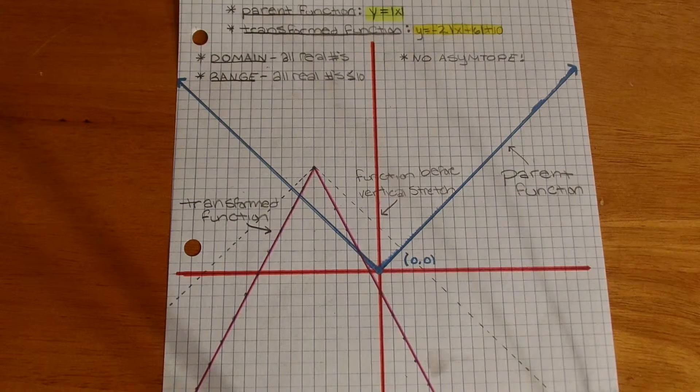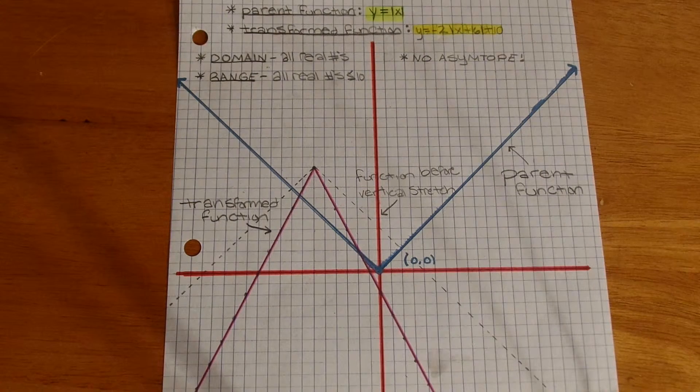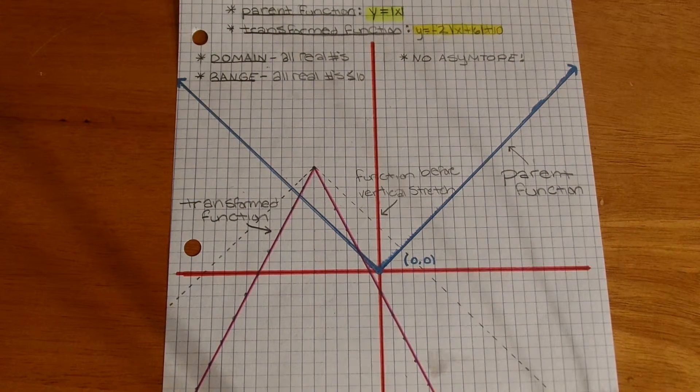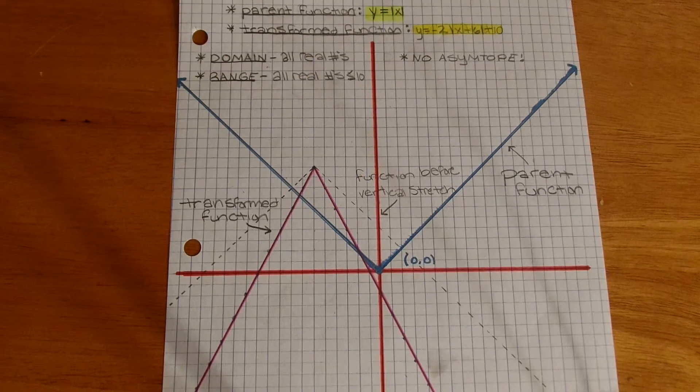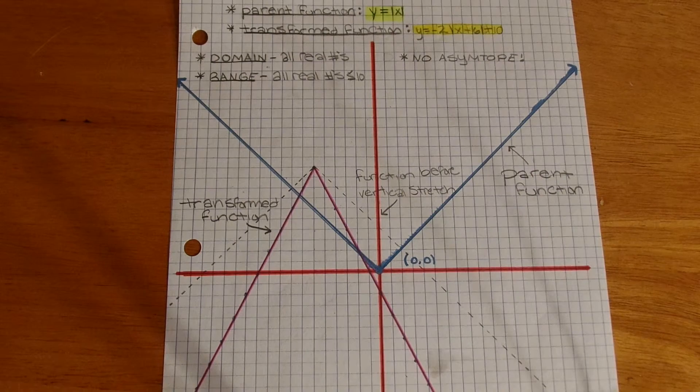Moving on to the domain and range, and whether it has an asymptote. The domain for the transform function is all real numbers. I know this because x has no bound.